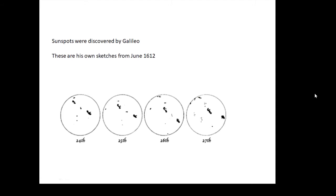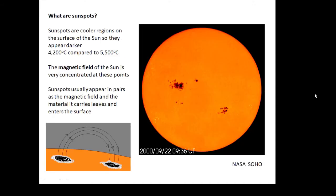What are sunspots? Well, they appear dark on the surface of the sun and that's because they are cooler regions on the surface of the sun. When I say cooler, they're not cool. I mean 4200 compared to 5500, but they are cooler regions.